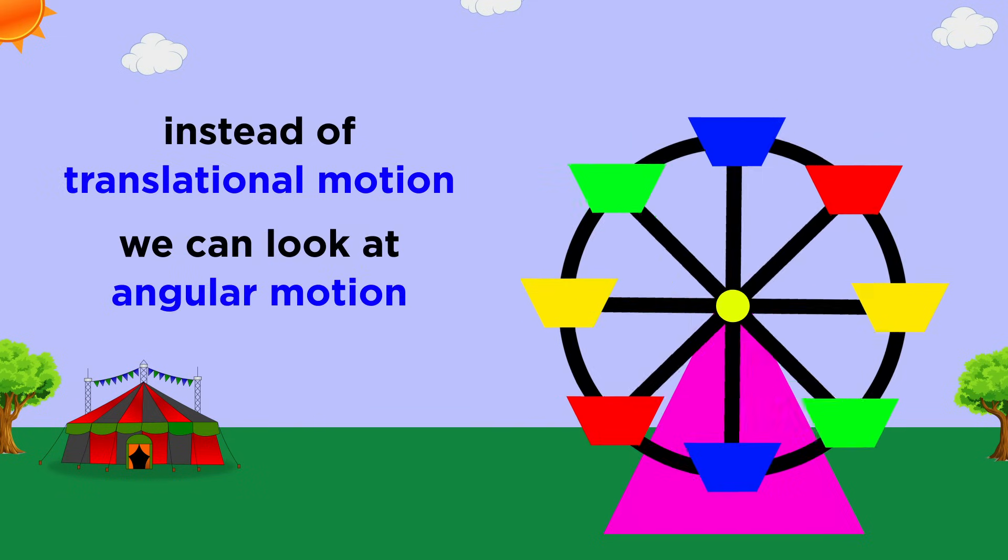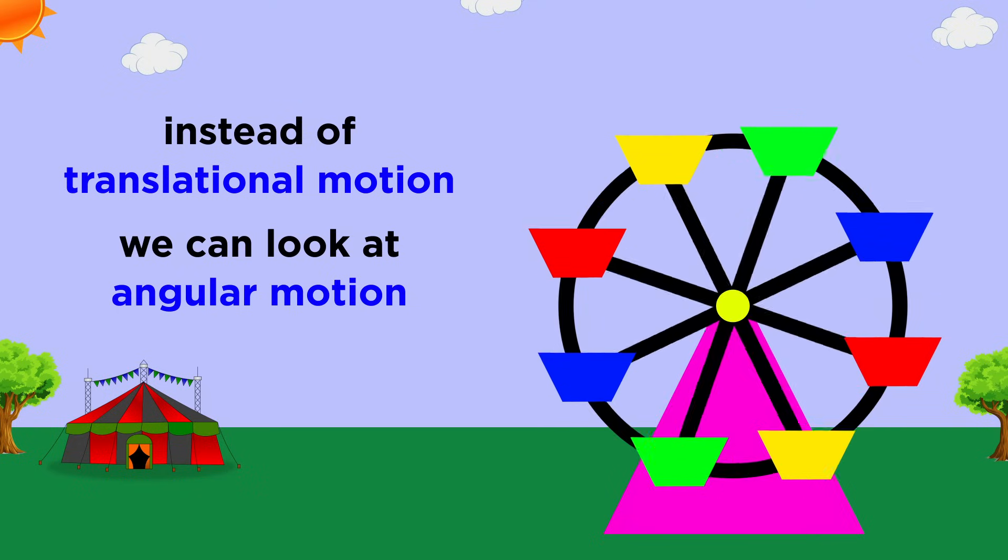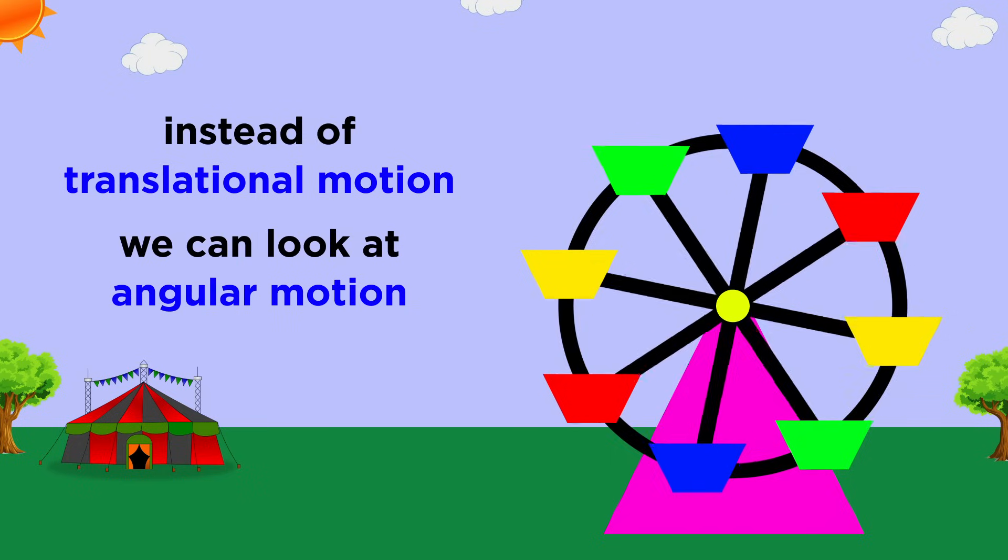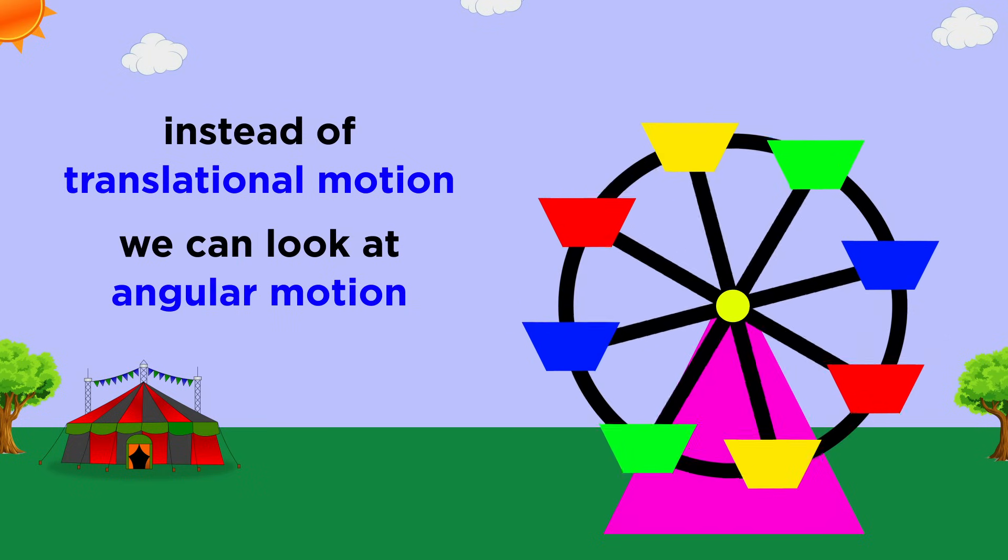For this reason, when we are looking at a rotating rigid object, rather than looking at translational motion, we will want to discuss angular motion or rotational motion.